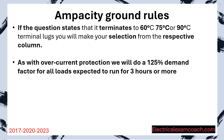Now let's lay some ampacity ground rules. Unless modified by a specific piece of equipment or another code, these rules apply generally. If the question states that it terminates to 60, 75, or 90 degrees C terminal lugs, you're going to make your selection from that respective column. And as with overcurrent protection, we're going to apply a 125% demand factor for all loads that are expected to run for three or more hours — the continuous load rule — and that carries over into wire sizing as well.